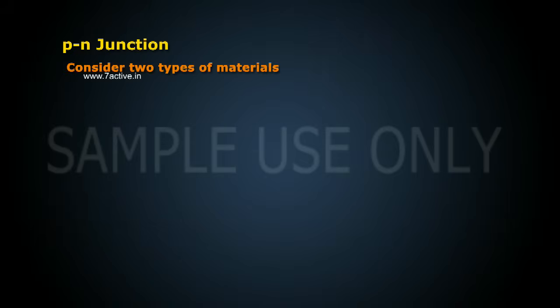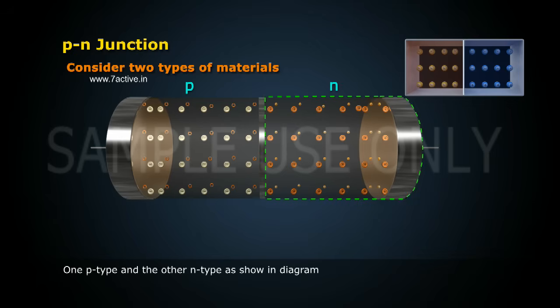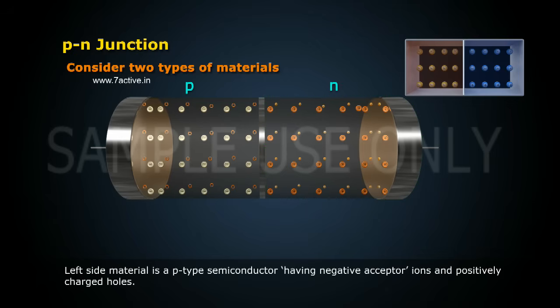Consider two types of materials: one P-type and the other N-type, as shown in the diagram. The left-side material is a P-type semiconductor having negative acceptor ions and positively charged holes.